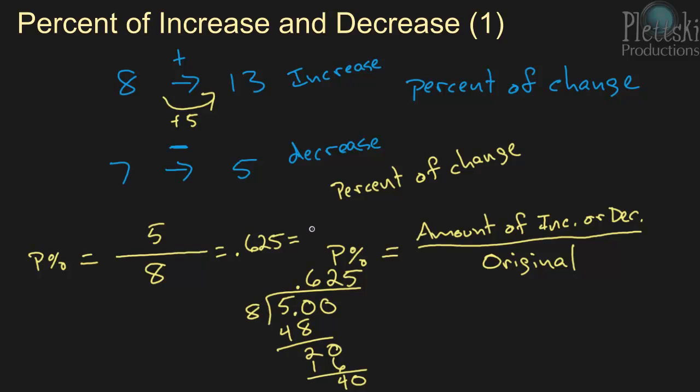Or we can write that as a percent. Remember with the percent, you just take the decimal and move it to the right two spaces. So it becomes 62.5%. And that's the percent of change. The percent of increase would be 62.5%.